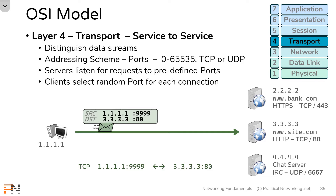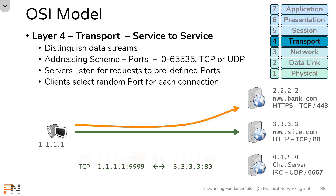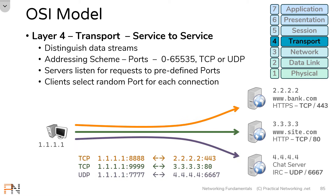This process occurs for each connection made by the client — in each case, the client is selecting a new random source port. This makes it so that when all these servers respond, whatever comes back on port 8888 will be given to the web browser, and whatever comes back on port 7777 will be given to the IRC client. In this way, the data streams are kept isolated from each other, and these ports will ensure that the right application gets the right data.